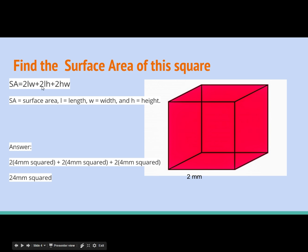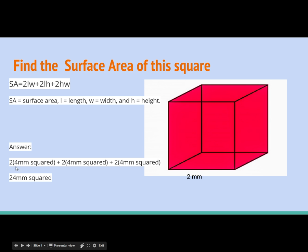Now we're going to add two times the length and the height. Our length is two and our height is two, so that's four millimeters squared, and that goes right in the middle here — multiply that by two. Next, two times height and width: our height is two and our width is two, giving us four millimeters squared. Two times four is eight, two times four is eight, two times four is eight. So eight plus eight plus eight is twenty-four millimeters squared.